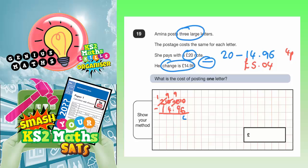So, ten take away six is four. Nine take away nine is nothing. Nine take away four is five. And one take away one is nothing. So, yeah, it is indeed five pound four.